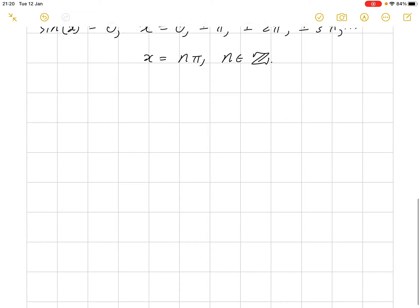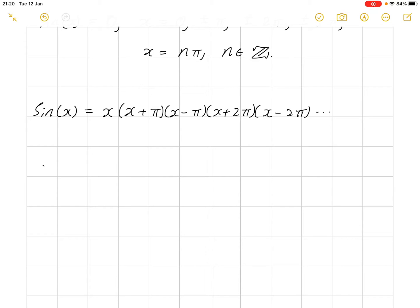So, why is this useful? Well, it means we can write sin of x is equal to x times x plus pi times x minus pi times x plus 2 pi times x minus 2 pi, and again, so on and so forth. And again, we'll divide both sides by x. And we get that sin of x divided by x is equal to x plus pi times x minus pi times x plus 2 pi times x minus 2 pi. And again, this is an infinite product. Now, we see we have pairs of things that we multiply.